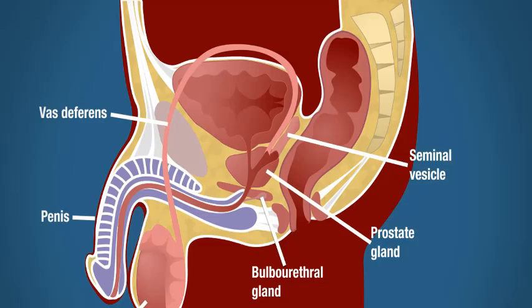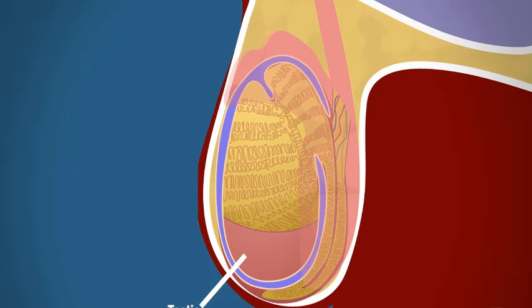We will begin with the testes, the male gonad. This is a diagram of a longitudinal section through one testicle, so you can now see what's inside. Notice that the majority of the testicle is composed of seminiferous tubules. These tubules produce sperm via spermatogenesis. But how? Let's take a closer look.